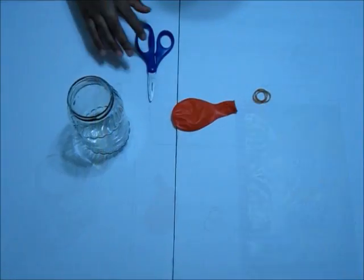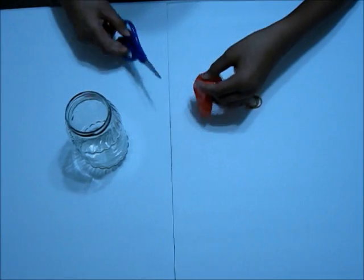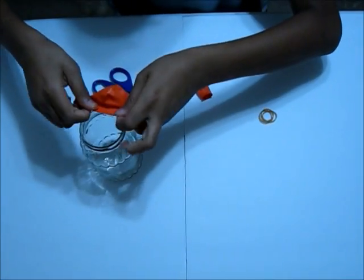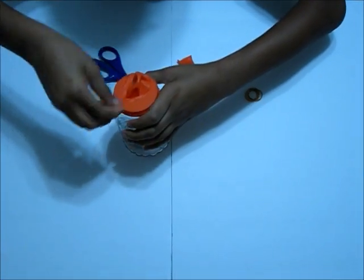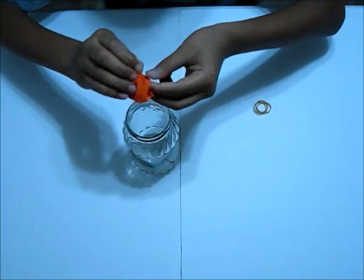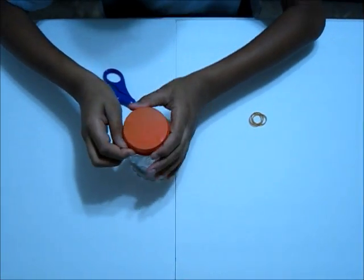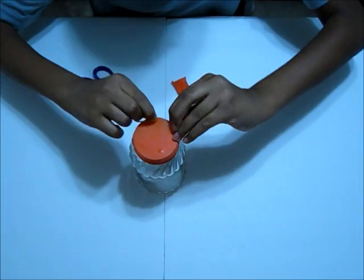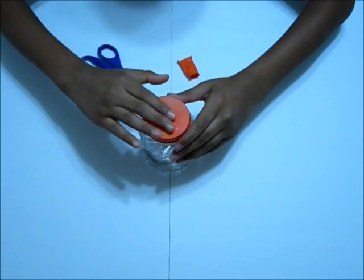Let's get started. For step one you'll need a jar, pair of scissors, balloon, and rubber band. Cut the balloon, place it over the jar just like this plain thing. Now place a rubber band over here to secure it. Just put a rubber band over here, that's better.